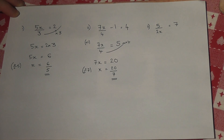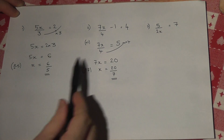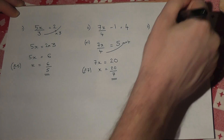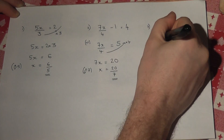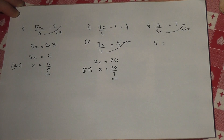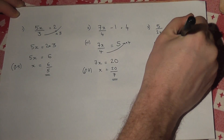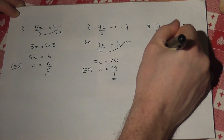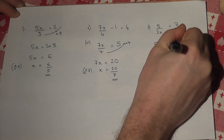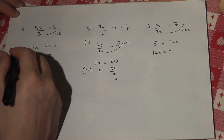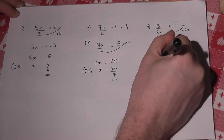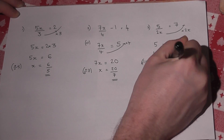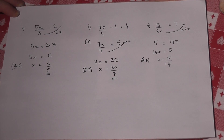Now this technique still works even when the x is in the denominator part of the fraction. So here I times by 3, here I times by 4, in this one I times up by the entire 2x. So we end up with 5 equals, and 7 times 2x is 14x. I can now rewrite this as 14x equals 5, divide by 14, therefore x equals 5 over 14.